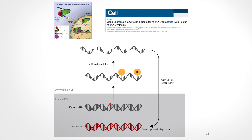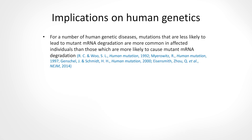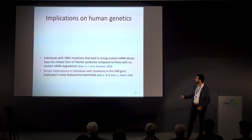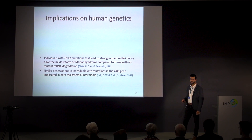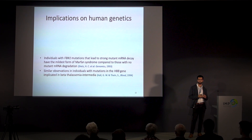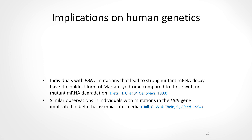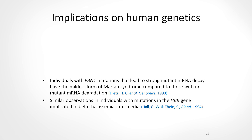Before I close, I want to say a couple of words about why we are excited about this finding in terms of human genetics. Going through the literature, we observed that for a number of human genetic diseases, mutations less likely to cause mutant mRNA decay tend to be more common than those that cause mRNA decay — in other words, in-frame mutations being more likely than nonsense mutations. For example, in Marfan syndrome, individuals with fibrillin-1 mutations that lead to strong mutant mRNA decay have the mildest form of the disease compared to those with no mutant mRNA degradation. Similar findings were observed in beta-thalassemia intermedia. We are excited to test whether those with mRNA decay have induction of a compensating gene, thereby causing milder phenotypes.